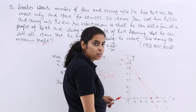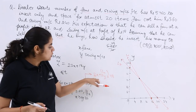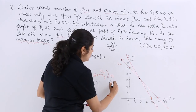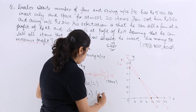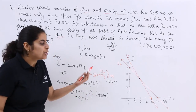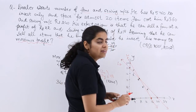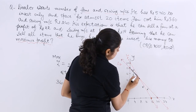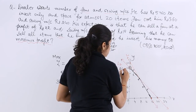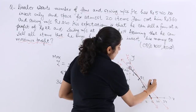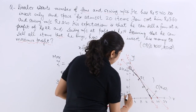Now I identify the feasible region. Testing the origin (0, 0) in L1: 0 ≤ 48 — true. Testing in L2: 0 ≤ 20 — also true. So both conditions are satisfied towards the origin, meaning the feasible region lies towards the origin from both lines. The corner points of the feasible region are: A = (0, 20), B (to be found), C = (16, 0), and D = (0, 0).